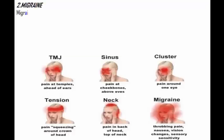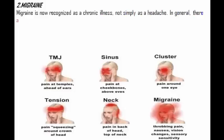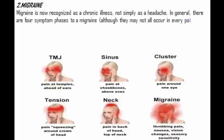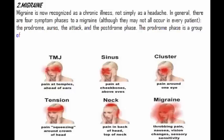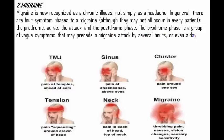Number two: migraine. Migraine is now recognized as a chronic illness, not simply as a headache. In general, there are four symptom phases to a migraine, although they may not all occur in every patient: the prodrome, the aura, the attack, and the postdrome phase. The prodrome phase is a group of symptoms that may precede a migraine attack by several hours or even a day or two.